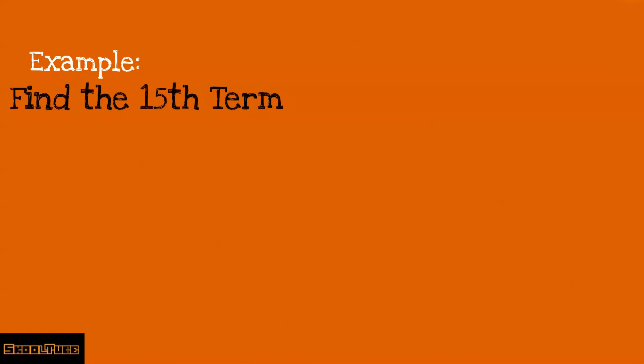Let's say we are asked to find the 15th term of the sequence. If we know that the sequence is arithmetic, then we can use the general term Tn equals a plus (n minus 1)d. Given the sequence to be 4, 10, 16, and 22.